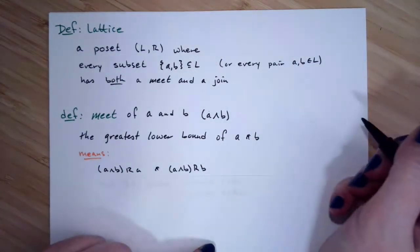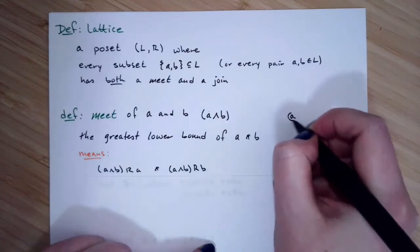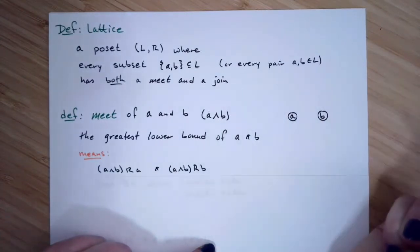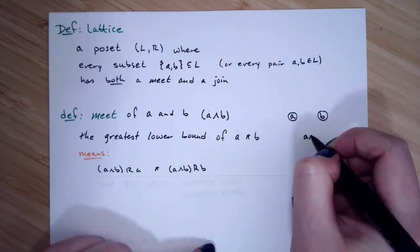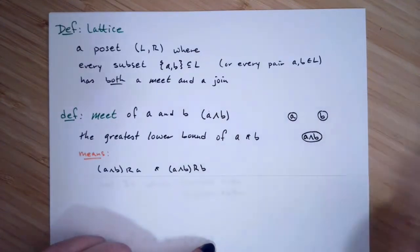So if we drew something like a picture, maybe we'd have A over here, maybe we'd have B over here. Your meet would be below both of them in the picture. So here would be A meet B.